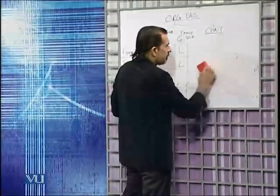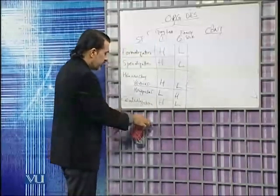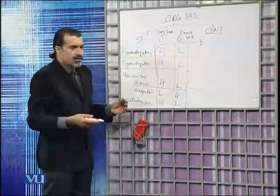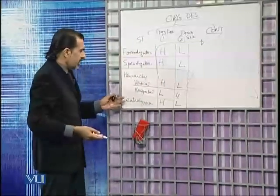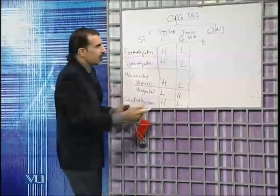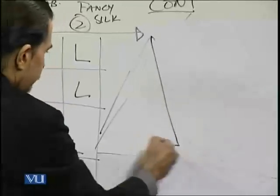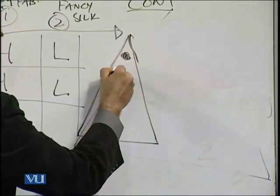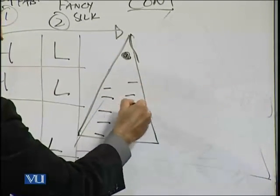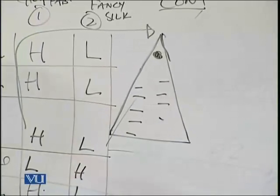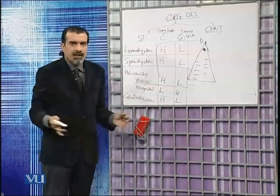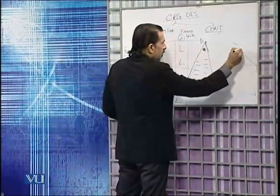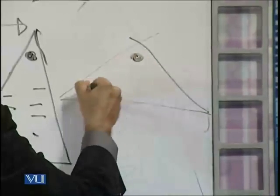Regarding centralization of decision making: if decision making occurs only at the top, as in the gray fabric company, centralization will be high. But if decision making occurs at various points throughout the organization, then centralization will be low — meaning there will be decentralization. So we can see how these structural variables create distinctly different organizational pictures.